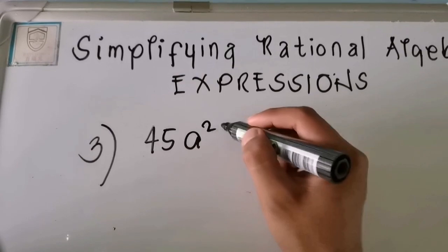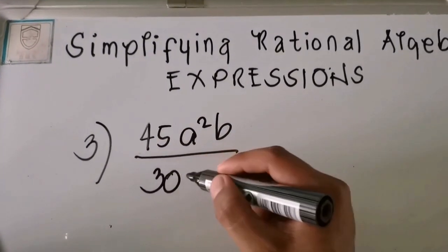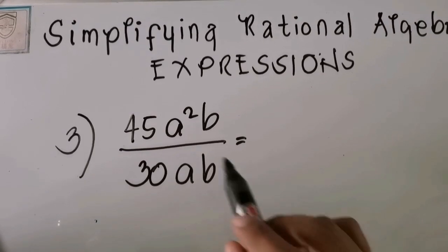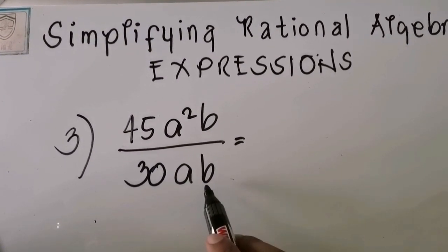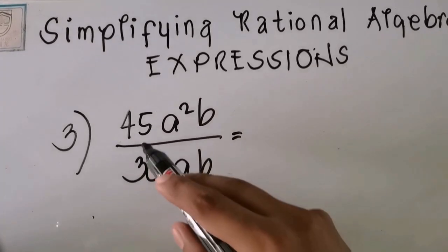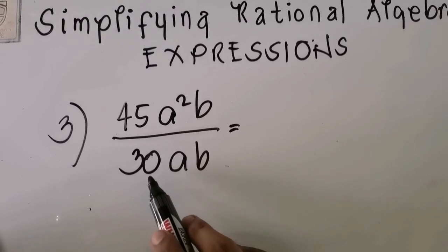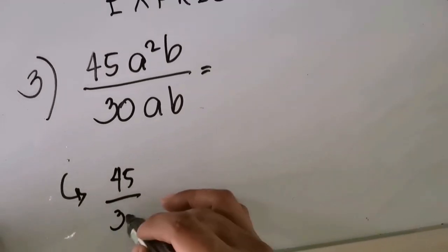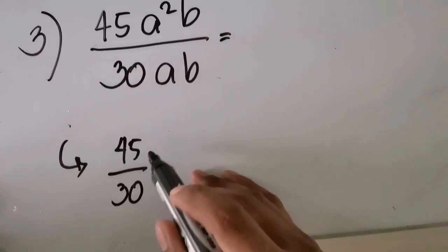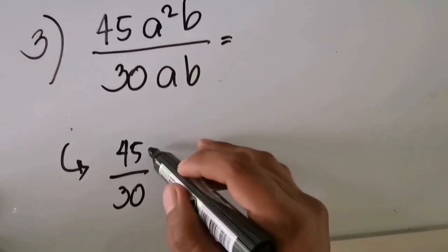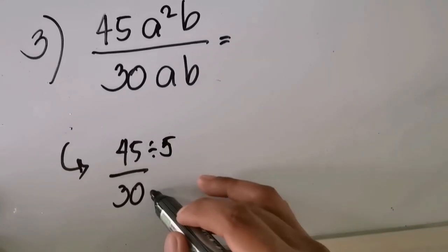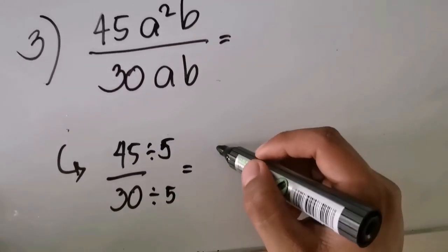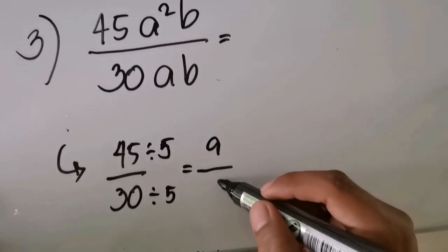For our last example, number three, we have 45a squared b over 30ab. Let us simplify this one. First we divide 45 by 30. Both 45 and 30 can be divided by 5, so 45 divided by 5 is 9, and 30 divided by 5 is 6.